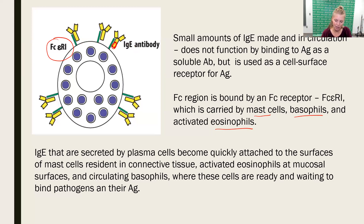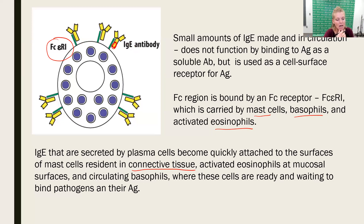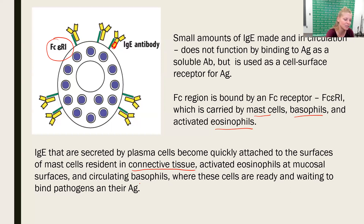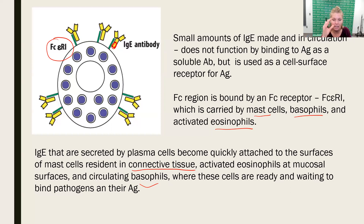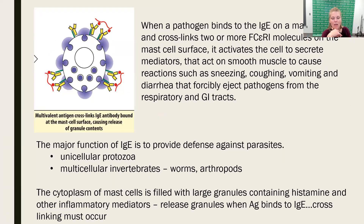IgE bound cells will be in connective tissue, maybe right below mucosal surfaces if it's a mast cell. Eosinophils can circulate in the blood but are also found at mucosal surfaces. Basophils are few in number but will also circulate in the blood, grabbing the FC portions of IgE and binding it. So mostly IgE is found on the surface of these three types of cells.